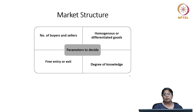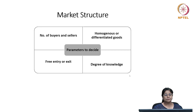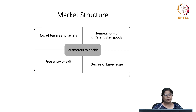What determines the type of market structure? The most important parameters — looking at the assumptions behind a specific type of market structure — are related to: the number of buyers and sellers, whether the good being produced is homogenous or differentiated, whether the market has free entry or exit, and the degree of knowledge. Number of buyers and sellers does not necessarily mean the absolute number; the idea is whether a single buyer or seller is able to influence the prices in the market or not.